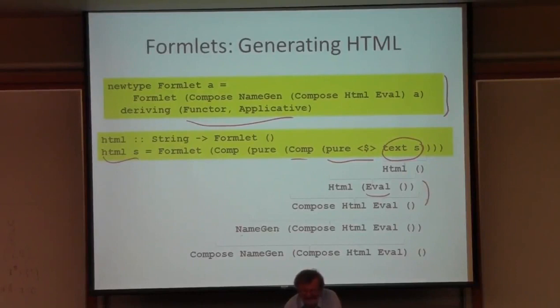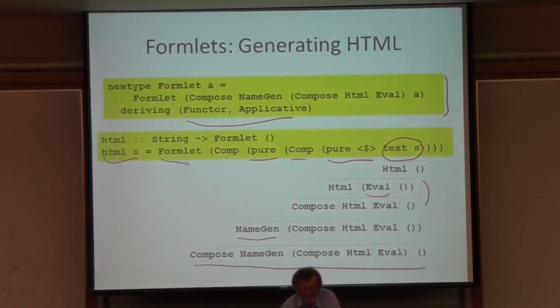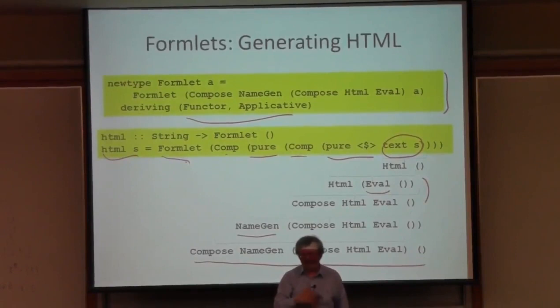I also have to add a name-gen functor to it, and `pure` will do that. Then I've tagged it with `comp` and I've got something of the right type to turn into a formlet. So it's very easy to promote operations from any formlet and the composition to the top level — all I do is either apply `pure` or use `pure` applied to.